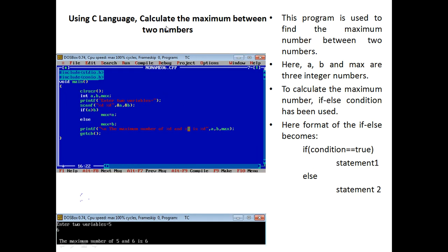Second program in C language is finding the maximum of two numbers. In this program we have declared three integer variables: a, b, and max to calculate the maximum number. Here we use the if-else condition. The format of the if condition is: if condition equal to true, then we execute statement one. If it is false, then we execute statement two.